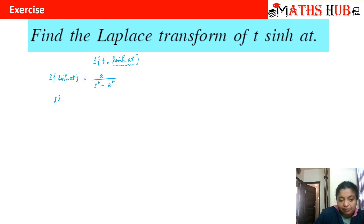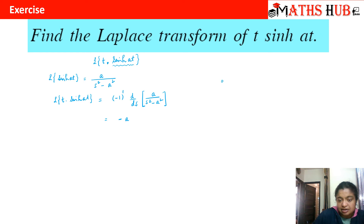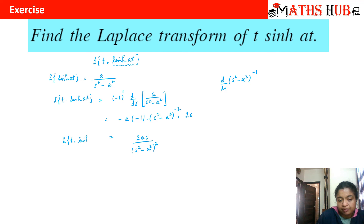Multiplying by t means applying (−1)¹ times d/ds of [a/(s² − a²)]. We can write this as −a · d/ds[(s² − a²)^(−1)], which gives −a · (−1)(s² − a²)^(−2) · 2s. The two negatives cancel, giving Laplace{t·sinh(at)} = 2as/(s² − a²)².